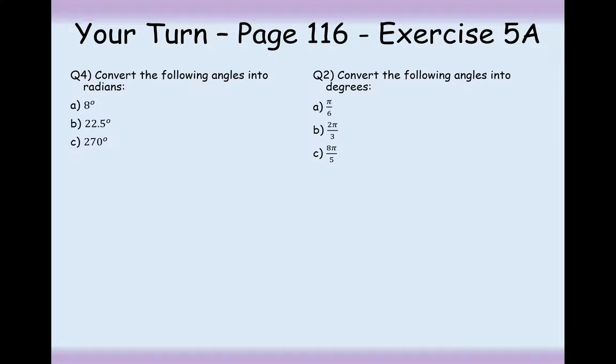Your turn to do a little bit of conversion now. Pause the video and try this out. So for part A, we need to first know what fraction 8 is of 180, and then we can times it by π. So 8 divided by 180 gives us a simplified fraction of 2π over 45.